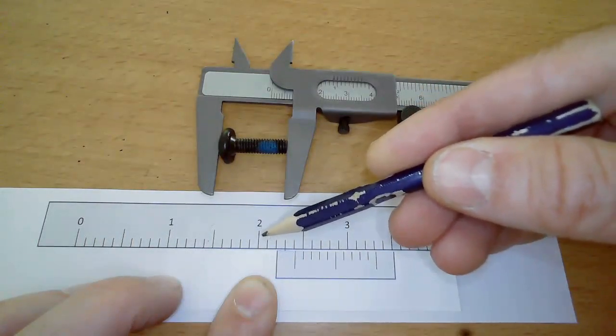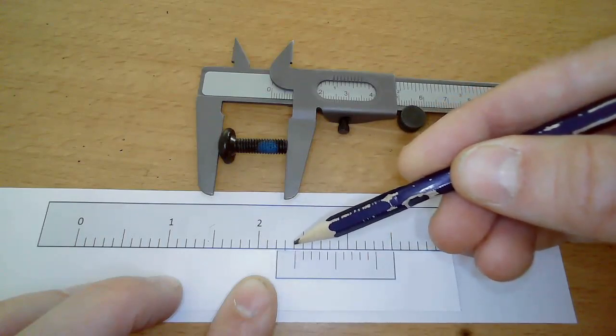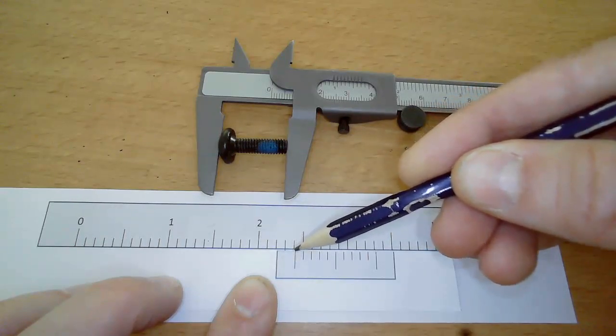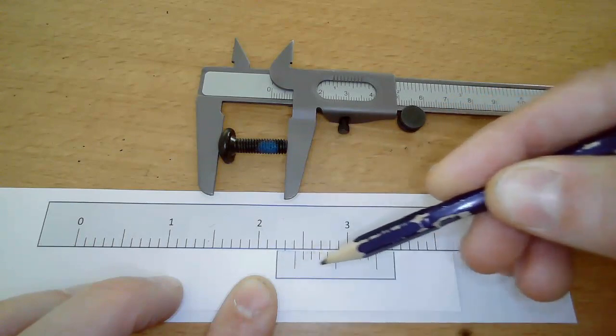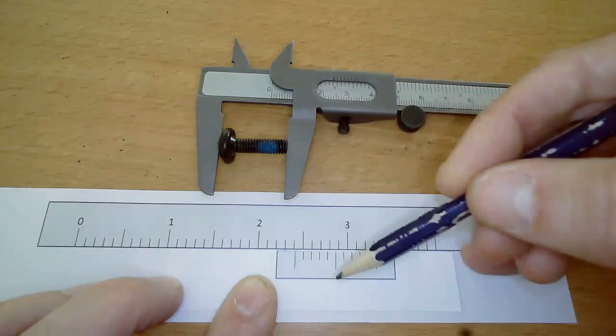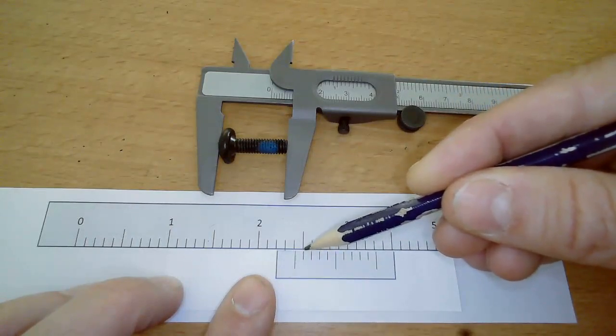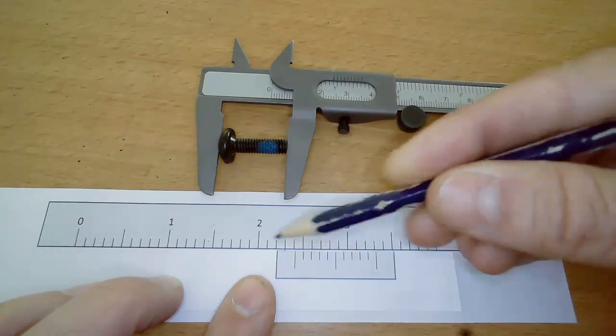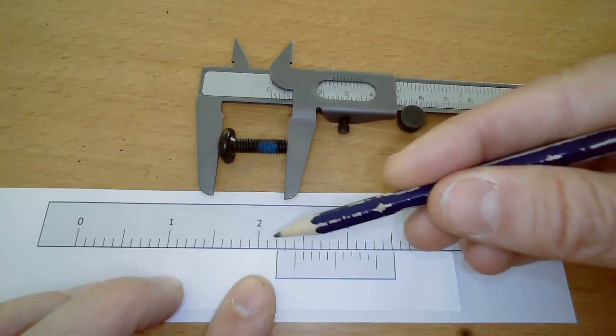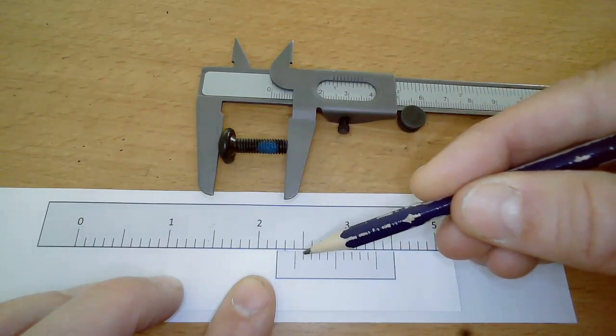The screw length is 2.4 centimeters on the main scale. Then we look at which vernier line lines up with the main scale - the closest one is the first one, so the reading is 2.41 centimeters.